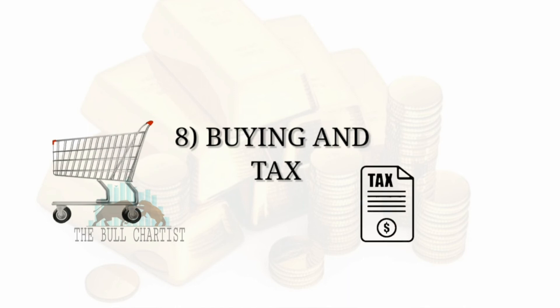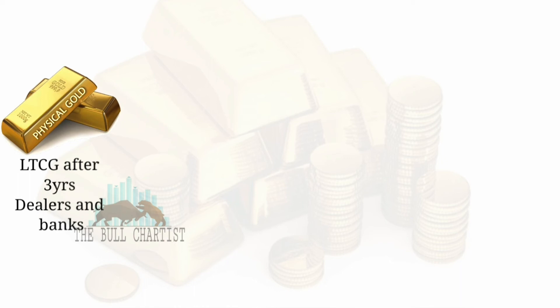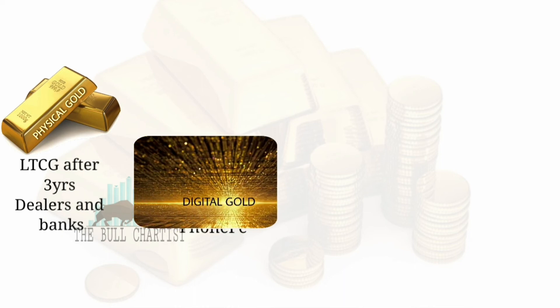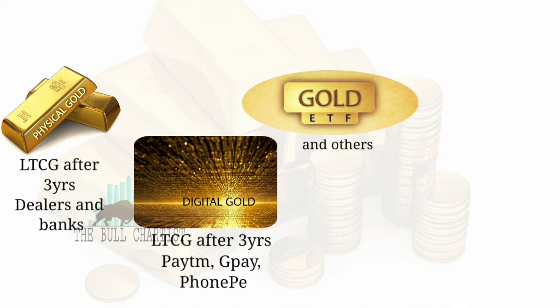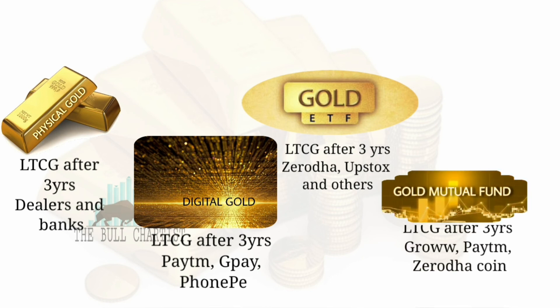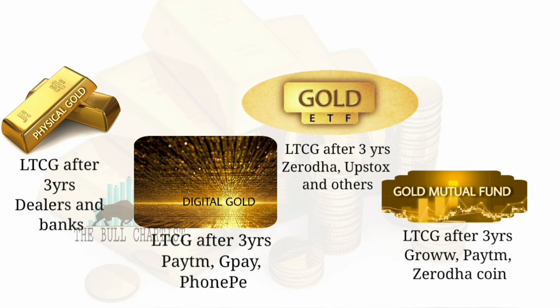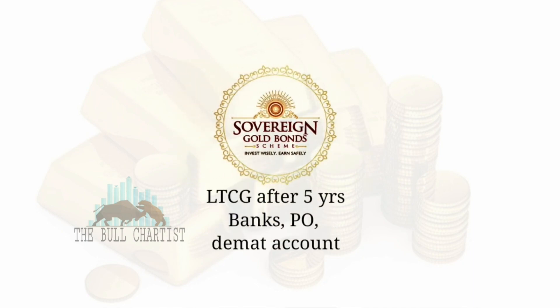Buying and tax: Physical gold has LTCG after 3 years, purchased from dealers and banks. Digital gold has LTCG after 3 years, purchased using Paytm, GPay, or PhonePay. Gold ETF has LTCG after 3 years, purchased from Zerodha, Upstox, and others. Gold Mutual Fund has LTCG after 3 years, purchased using Groww, Paytm, or Zerodha Coins. Sovereign Gold Bond has LTCG after 5 years, purchased using banks, Post Office, and Demat account.